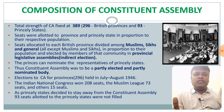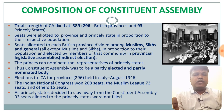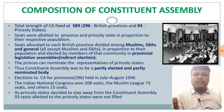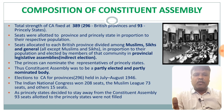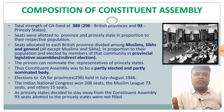Elections to the Constituent Assembly from provinces were held in July–August 1946. The Indian National Congress won 208 of the 296 seats, the Muslim League won 73, and all others won the remaining 15 seats. Since the Princely States decided not to join the Constituent Assembly, the 93 seats for them remained vacant, and only the 296 provincial seats were filled.